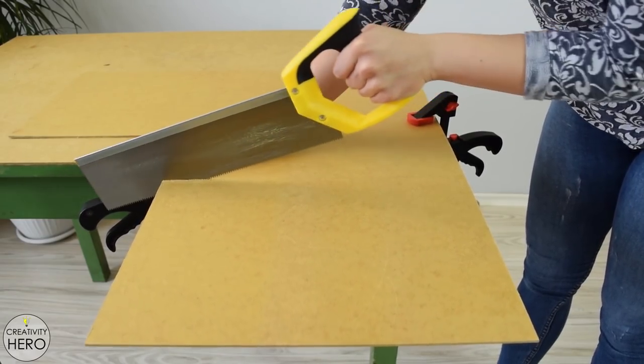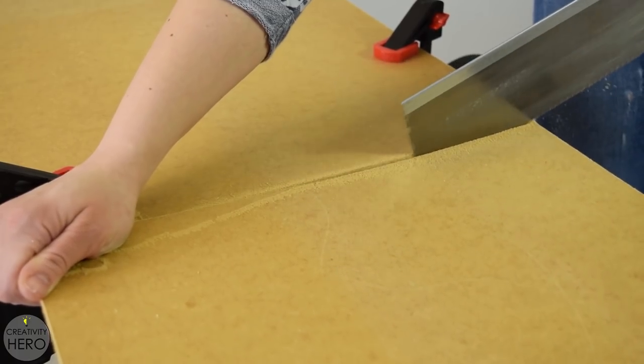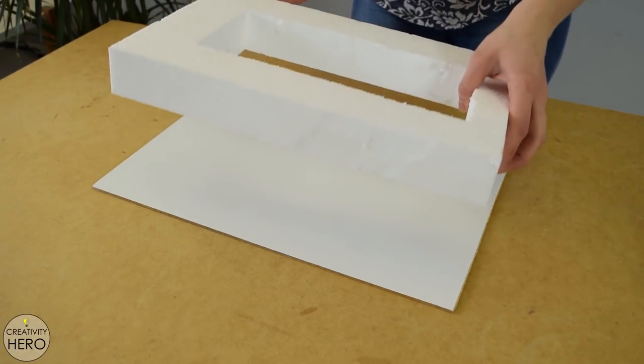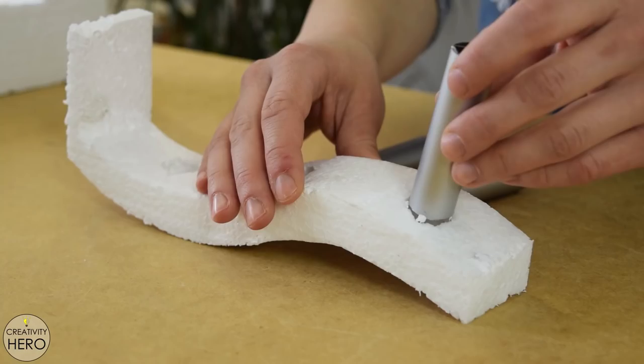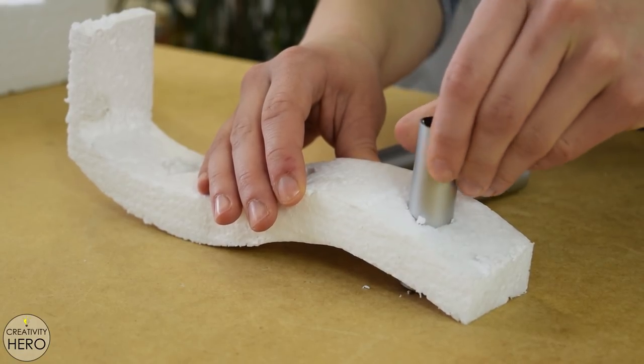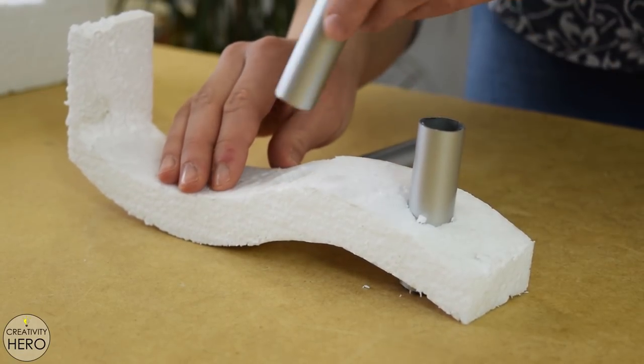I used a fiber board for the bottom support of the mold. Using a hand saw I cut a piece of the fiber board and made it a bit larger than the styrofoam itself. Now I can join all the parts together to make a firm mold with the desired shape.